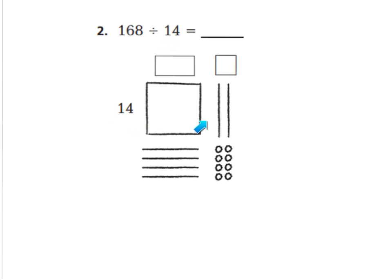We want to create the rectangle going out this way until the whole thing equals 168. Counting: 100, 10, 20, 30, 40, 50, 60 — and we stop right there. The rest will be done with units: 62, 64, 66, 68. I have a completed rectangle using all of my pieces. 168 divided by 14 is going to equal this quotient up top. This piece side for my flat has the value of 10 units going across the top, so I'm going to write 10 right here in this little box. Will you write 10 in your box too?